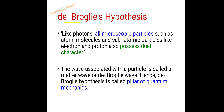What is de Broglie's hypothesis? De Broglie stated that like photons, all microscopic particles such as atoms, molecules, and subatomic particles like electron and proton also possess dual character. Dual character means wave-like nature as well as particle-like nature. The wave associated with the particle is called a matter wave or de Broglie wave.